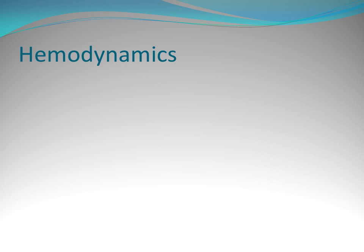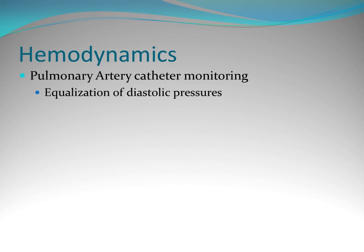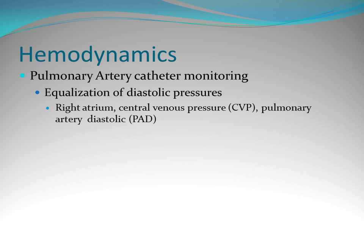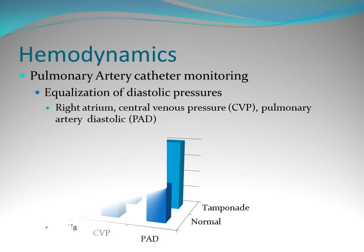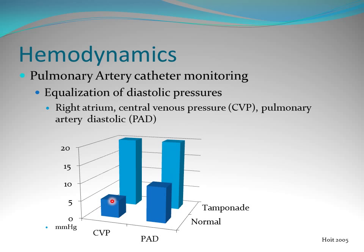For hemodynamics, if you have a pulmonary artery catheter, you're able to see an equalization of diastolic pressure — the filling pressure — since cardiac tamponade is a diastolic problem. Your CVP and your PAD, or pulmonary artery diastolic pressure, are going to equalize. Normally you can see different filling pressures representing right-sided and left-sided preload, and they equalize with tamponade.